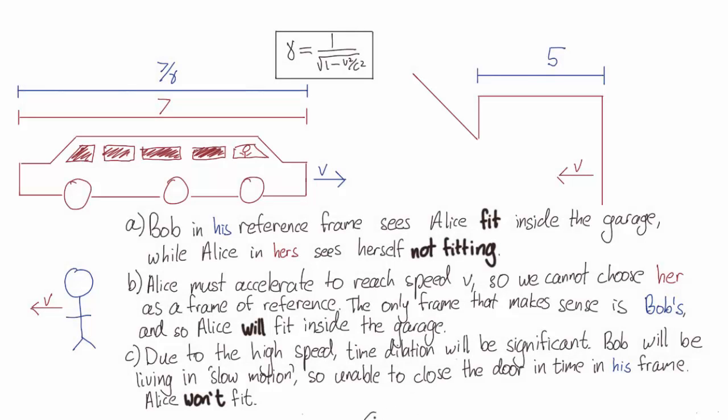Let's go through these possible answers one at a time, starting with C. C says the problem is time dilation. Because of the high speed, Bob won't be able to close the garage door in time. But there's a problem with this.